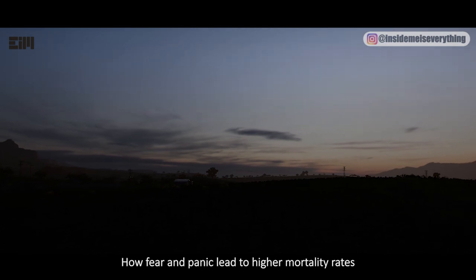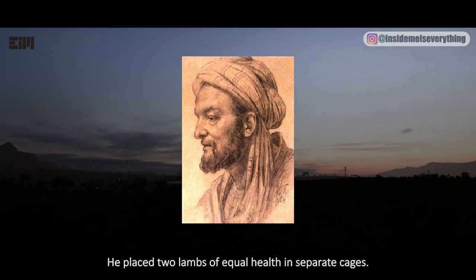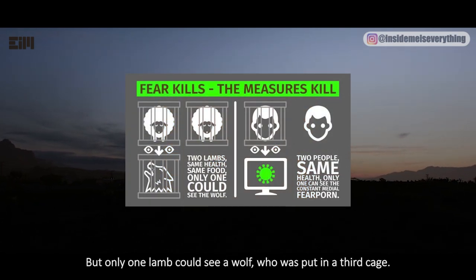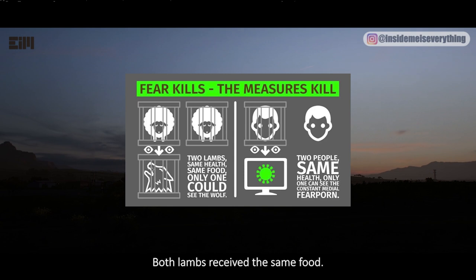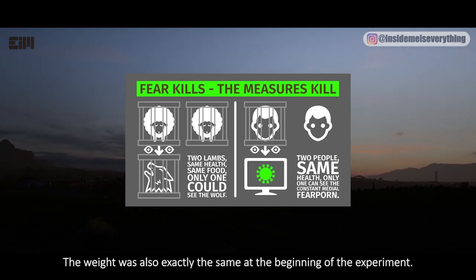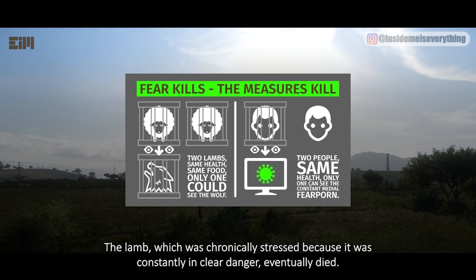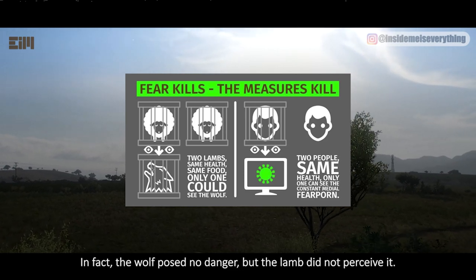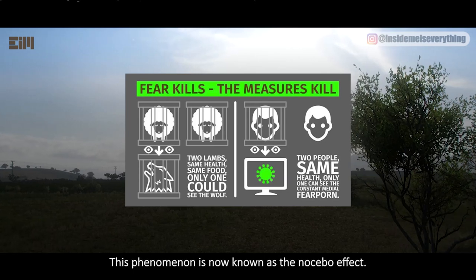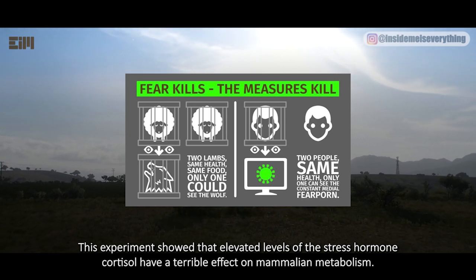How do fear and panic lead to higher mortality rates? Avicenna, a Persian scientist who lived 1,000 years ago, placed two lambs of equal health in separate cages. Only one lamb could see a wolf placed in a third cage. Both lambs received the same food and started at the same weight. However, after a few months, the lamb that could see the wolf became moody, restless, and weak — it lost a lot of weight and showed signs of poor development. The chronically stressed lamb eventually died, even though the wolf posed no actual danger. This phenomenon is now known as the nocebo effect, demonstrating that elevated cortisol levels have a terrible effect on mammalian metabolism.